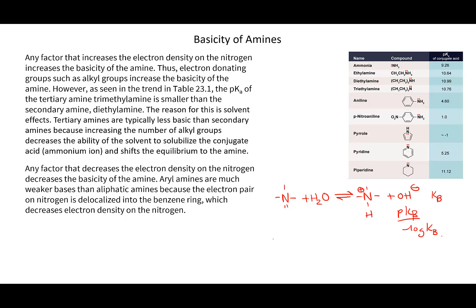Unfortunately, this chart shows the pKa of the conjugate acid - that is, taking the acid and reacting it with water to form the amine and H3O-plus. That's a Ka equilibrium showing minus the log of Ka. So we have to figure out from this chart what's most basic, or rather what's least acidic, since it gives us the equilibrium for the ammonium giving up its proton.